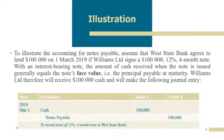To illustrate, we have the Accounting for Notes Payable here. Assume that West State Bank agrees to lend $100,000 on 1st March 2019, if Williams Limited signs a $100,000, 12% per month note. With an interest bearing note, the amount of cash received when the note is issued is generally equal to the note's face value. So in this case, we just debit cash and credit notes payable $100,000.